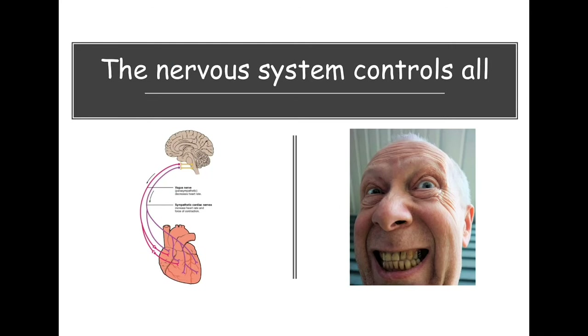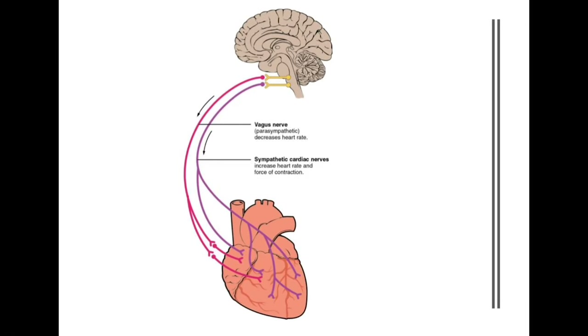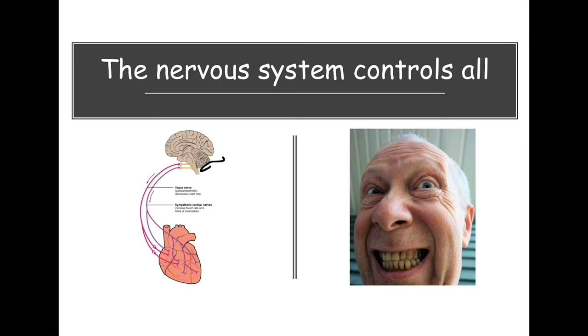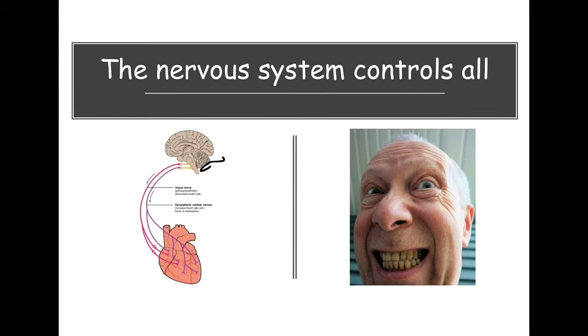The nervous system is one of the most important systems of the body because it controls essentially everything that's automatic about you. For example, the brain sends neuronal signals out to the visceral organs. The vagus nerve — cranial nerve 10 — has a parasympathetic and a sympathetic division that can regulate your heart. The nervous system also controls something very basic like your skeletal muscles — how you smile, move your eyes, the muscles of your cheek — all controlled by the nervous system.